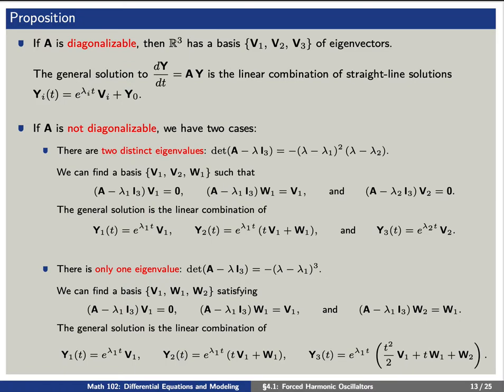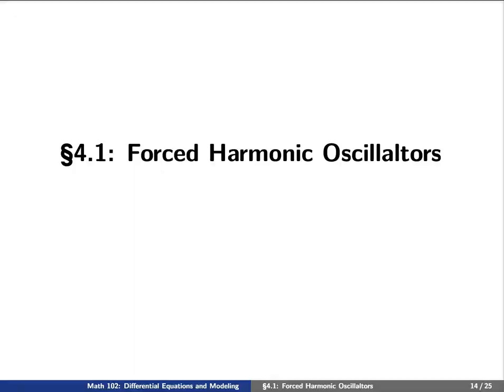In the second case, if there is only one eigenvalue, the characteristic polynomial factors as (lambda minus lambda1)^3. We can find the basis consisting of V1, W1, and W2 such that V1 is an eigenvector, W1 is a generalized eigenvector corresponding to V1, and W2 is a generalized eigenvector corresponding to W1. The general solution is a linear combination of y1 (a straight-line solution), y2 which is e^(lambda1*t)*(t*V1 plus W1), and y3 which is e^(lambda1*t)*(t*W1 plus W2).